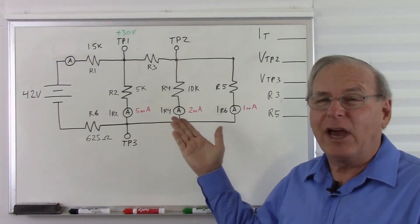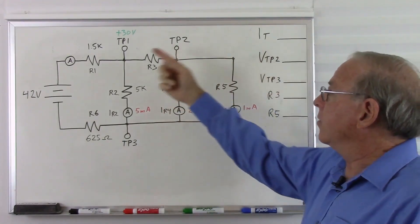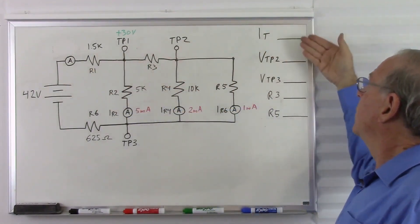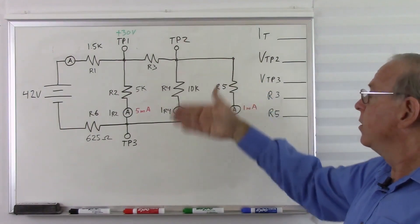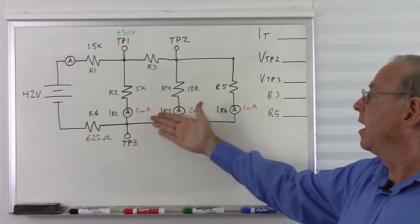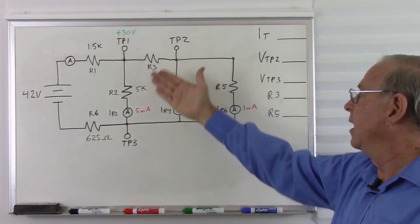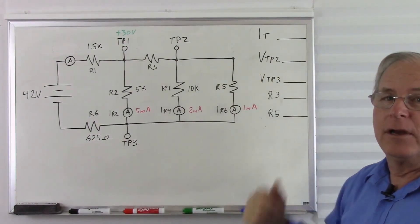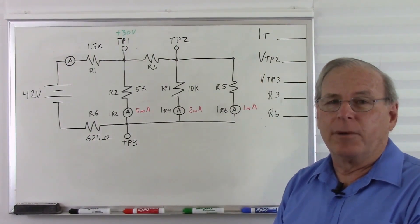This is starting to look complicated, but let's see how bad it is. What we're looking for is the total current, the voltage at test point 2, the voltage at test point 3, and the values of R3 and R5. Pause the video and solve the problem.